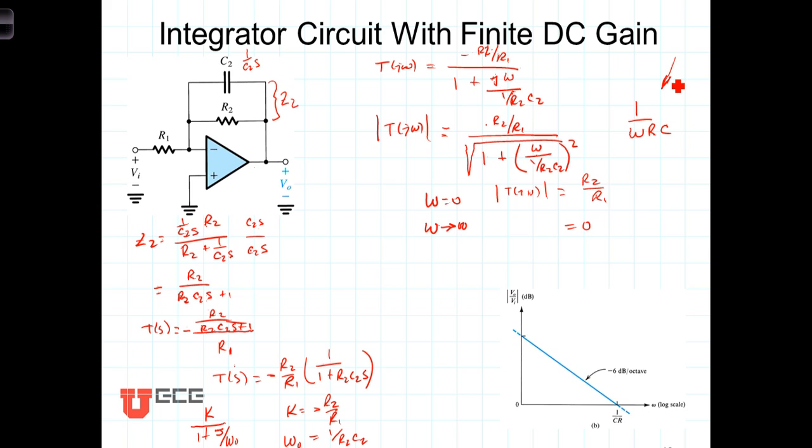We note though that the larger R2 is, the closer this will be to a true integrator. The problem with that is that the DC gain gets bigger and bigger as R2 gets bigger and bigger. So there's a trade-off here. If we want stability and don't want it to saturate, we want to keep R2 reasonable. But to have it be more like an ideal integrator, you want to have R2 as big as possible. So there is a trade-off there.